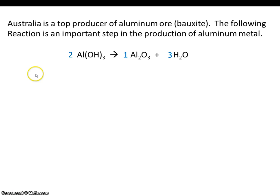What these coefficients mean are moles. So two moles of aluminum hydroxide are required to make one mole of aluminum oxide, and in that process, three moles of water will also be produced.